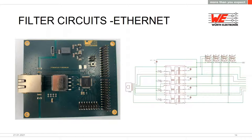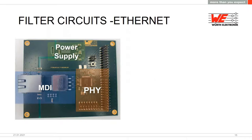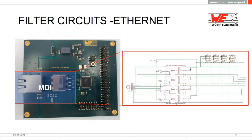For standard Ethernet we built a PCB showing the MDI connector, passive filtering components, the power supply for the PHY chip, and the PHY chip itself. For gigabit Ethernet the MDI filtering includes four LAN transformers, four common mode chokes, and TVS diodes.